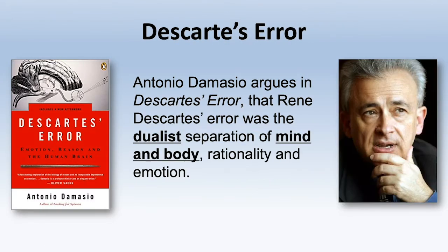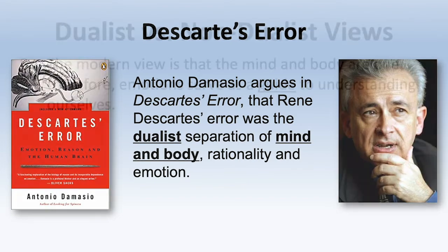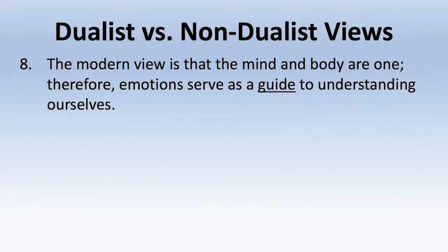Antonio Damasio argues in Descartes' Error that Rene Descartes' error was a dualistic separation of mind and body, rationality and emotion. As discussed in previous lessons, dualism has been prevalent in our thinking about human psychology for thousands of years, but this has been problematic. The idea that mind and body are separate led to the idea that rationality and emotion are distinct. The reality is rationality and emotions go together — they're both intricately connected. The modern view is that the mind and body are one; therefore, emotions serve as a guide to understanding ourselves, and gut feelings can guide our rational thinking.